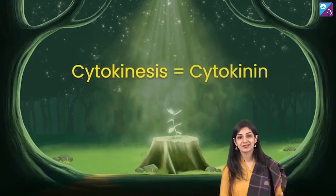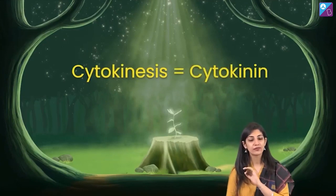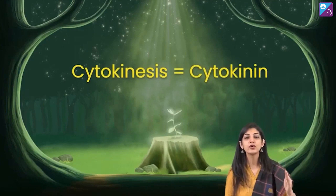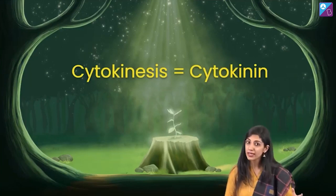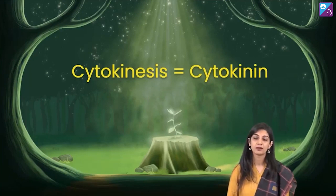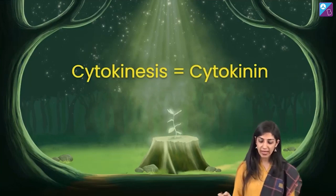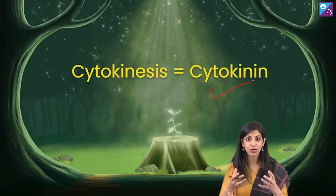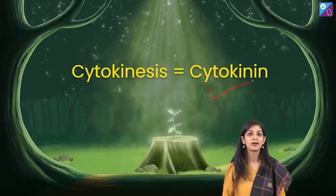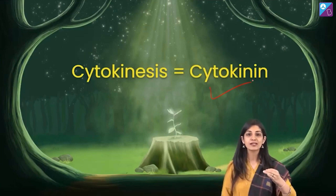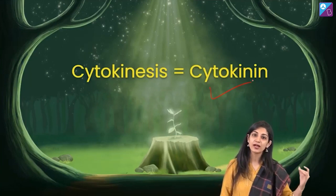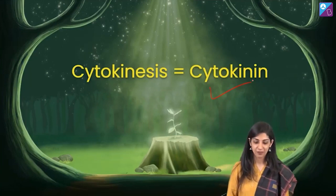Cytokinesis is regulated by a naturally occurring substance called cytokinin. We are very lucky that they did not give us a new term to learn — it is simply known as cytokinin because it enhances or promotes cytokinesis.